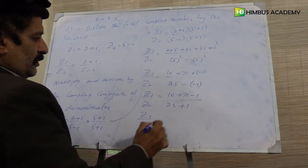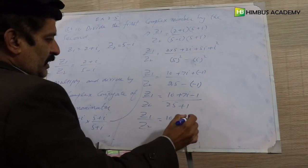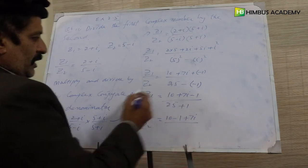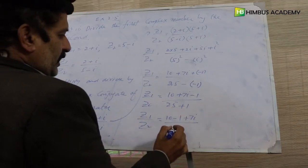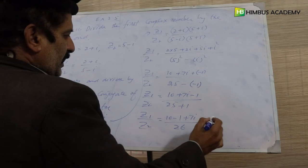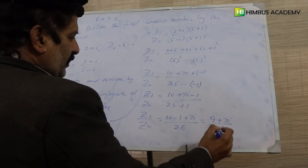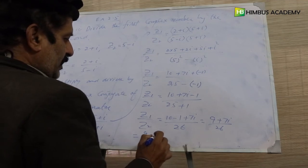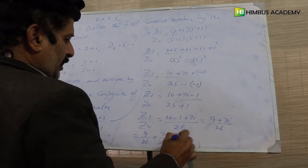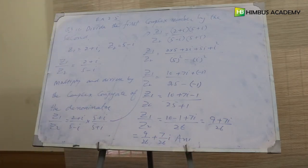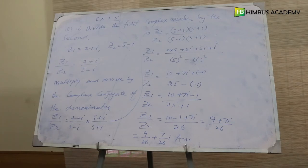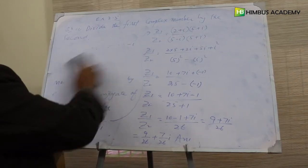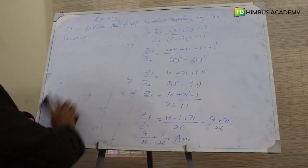z1 over z2 equals ten minus one plus seven iota — combining real with real — over twenty-five plus one which is twenty-six. This gives nine plus seven iota over twenty-six. So nine over twenty-six is the real portion and seven over twenty-six iota is the imaginary portion. This completes the first part of question four.